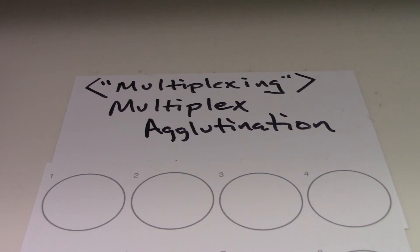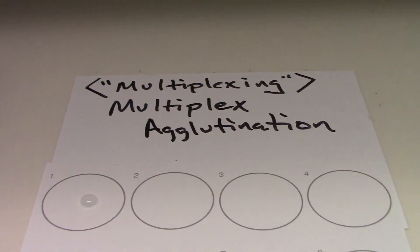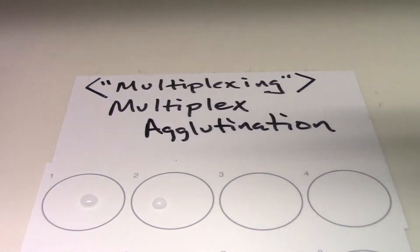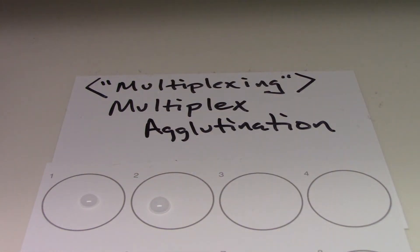The first thing I'm going to do is I'm going to add three different specimens. So I have specimen number one, specimen number two, specimen number three.